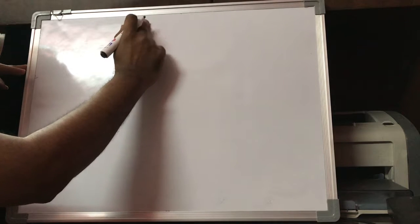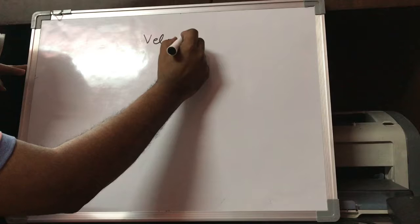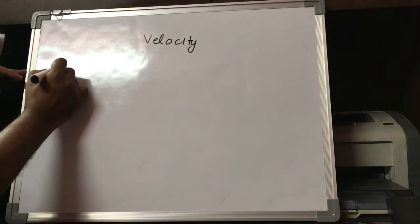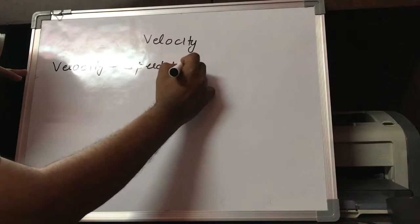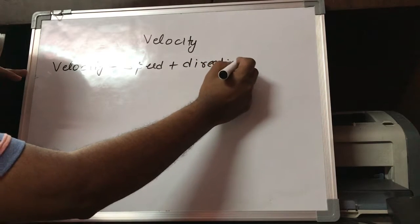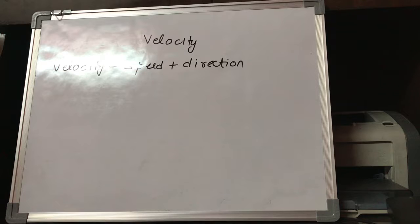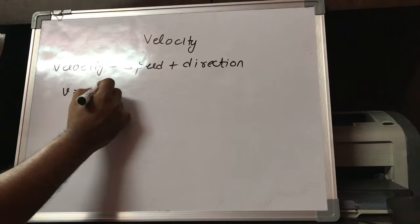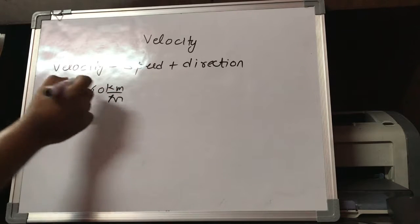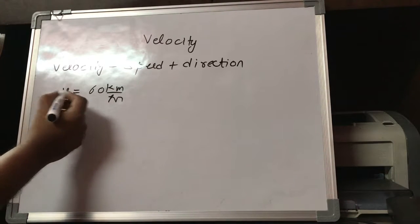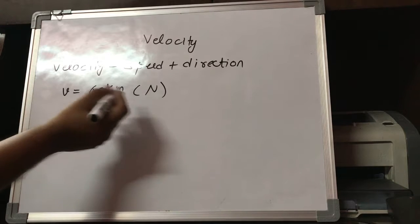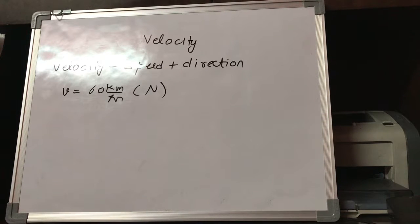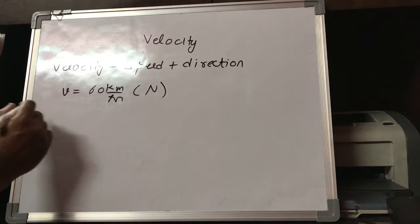After covering the concept of average speed, we are now going to talk about the concept of velocity. Basically, velocity is speed plus direction. So if I say that a car is moving with the speed of 60 kilometers per hour, that is the speed of the car. But if I say it is moving at 60 kilometers per hour in the northward direction, then it becomes the velocity of the car, because we have also mentioned the direction.